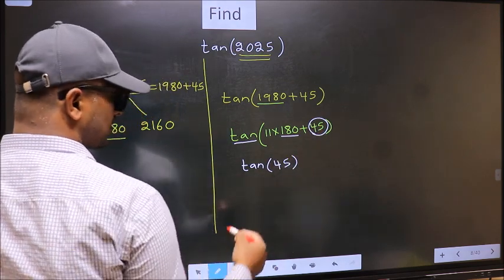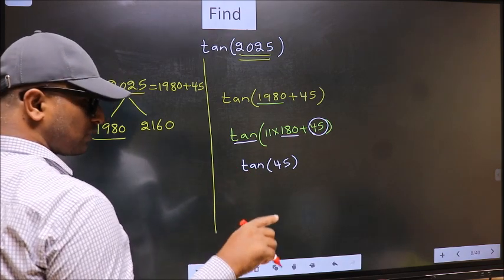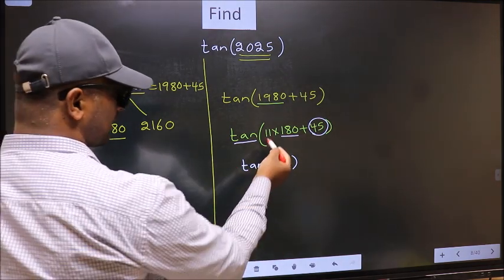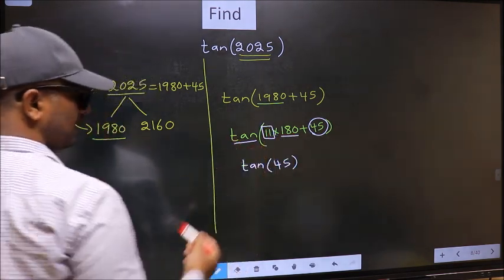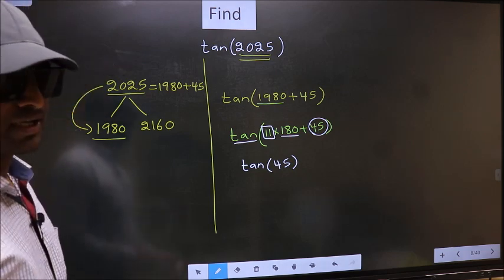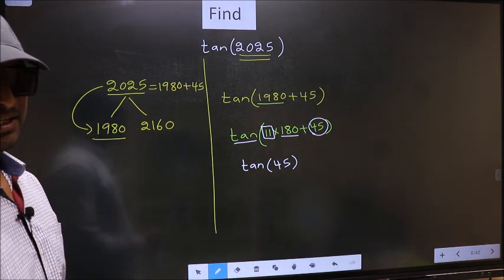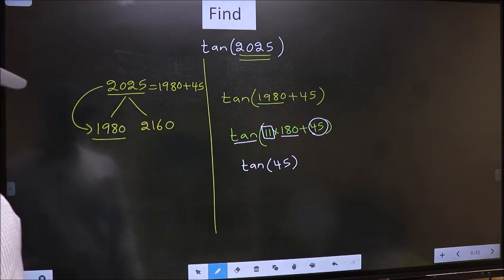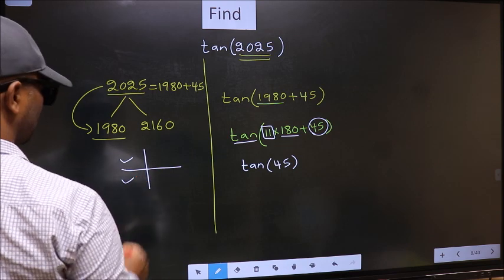Now, the question is, will we get here plus or minus? To answer that, we should look at the number before 180. That is 11. And 11 is odd. And all the odd multiples of 180, they lie either in the second or in the third quadrant.